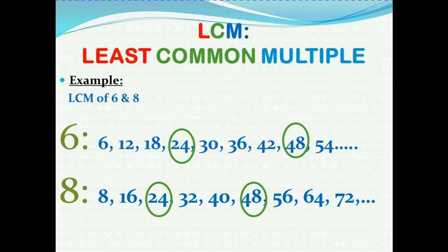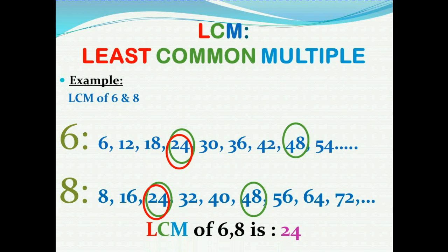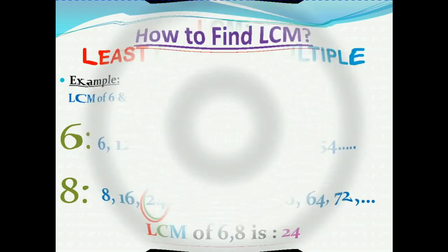The number of multiples is infinite, so the number of common multiples is also infinite. Among this infinite set of common multiples, we consider the least number, which will be a unique number. The least number is 24. So 24 is a common multiple and is the least, meaning 24 is the LCM of 6 and 8. Using this method — listing out common multiples and finding the smallest — we can find the LCM.